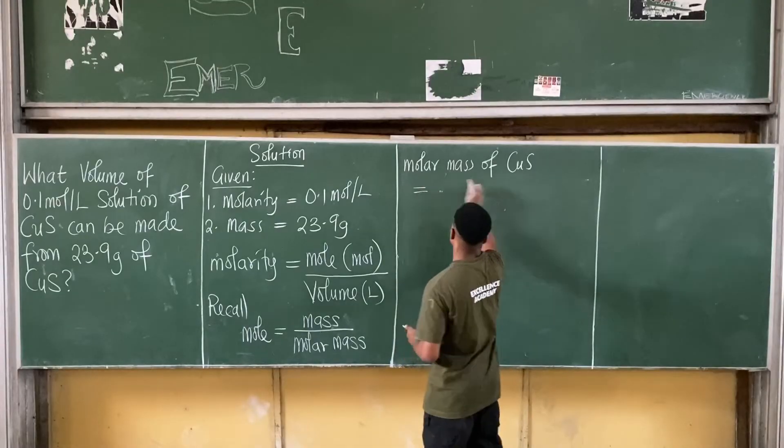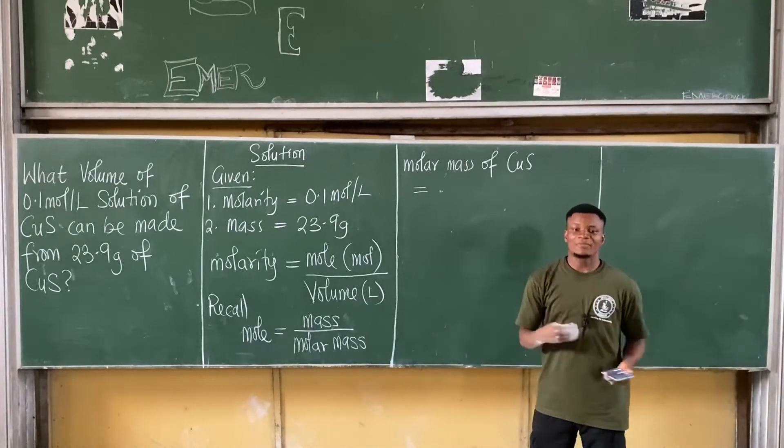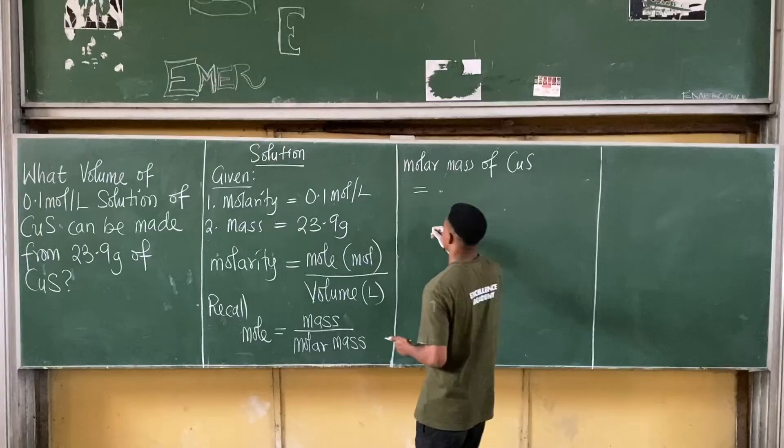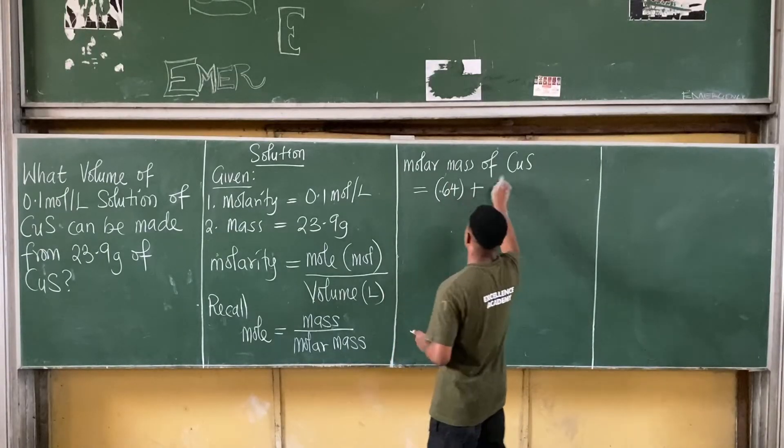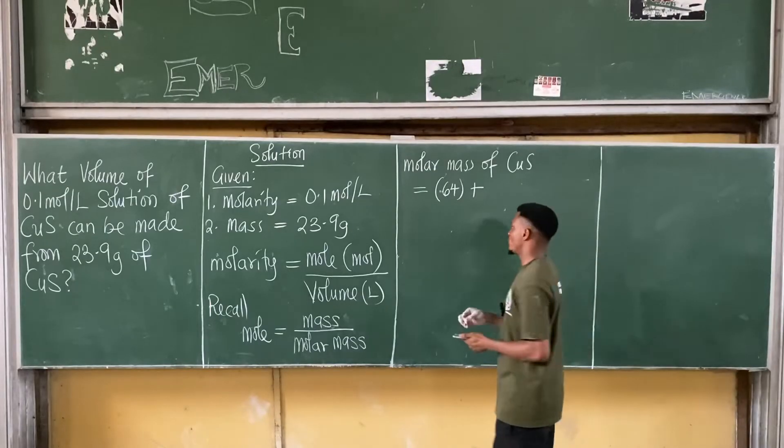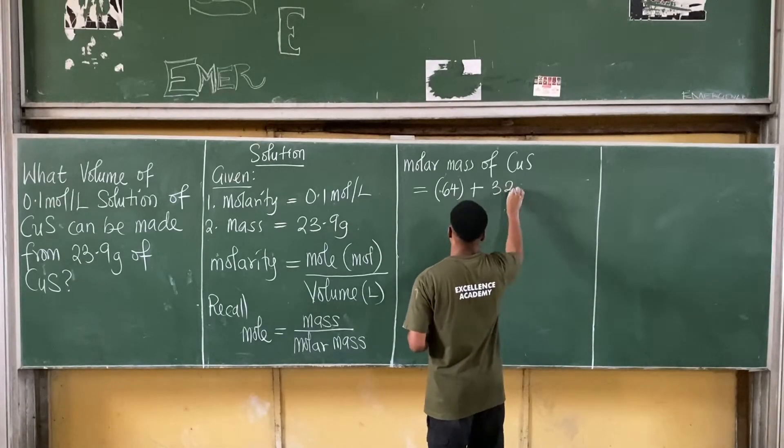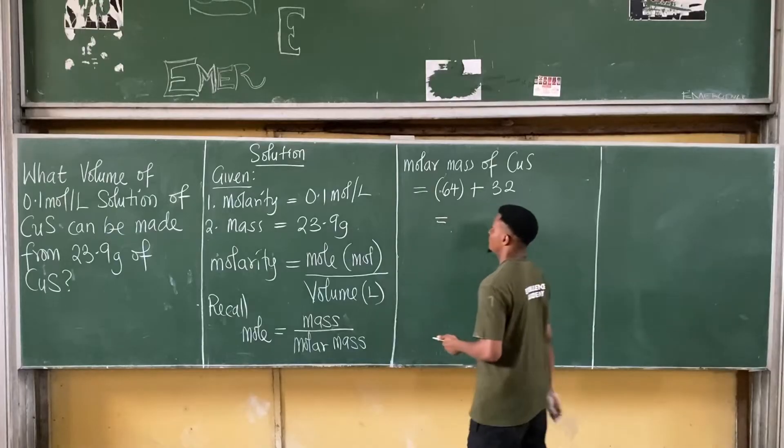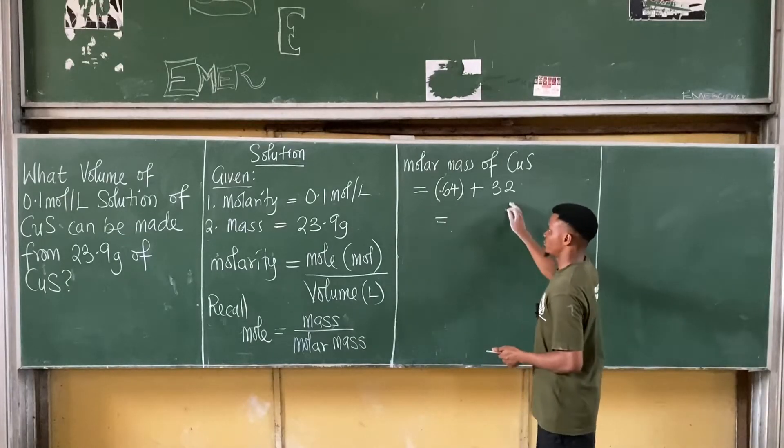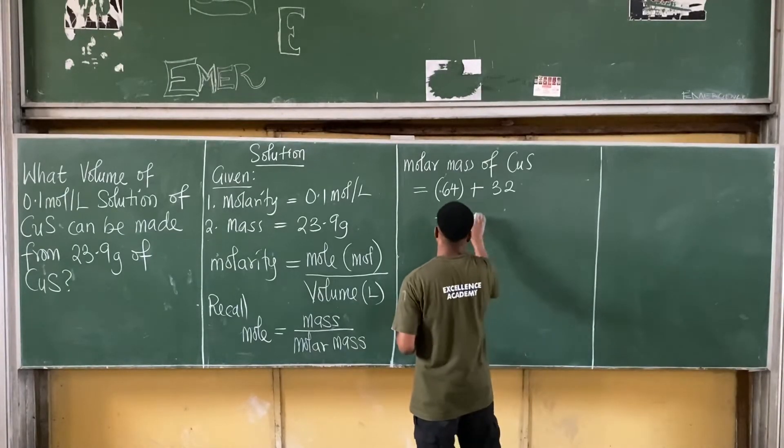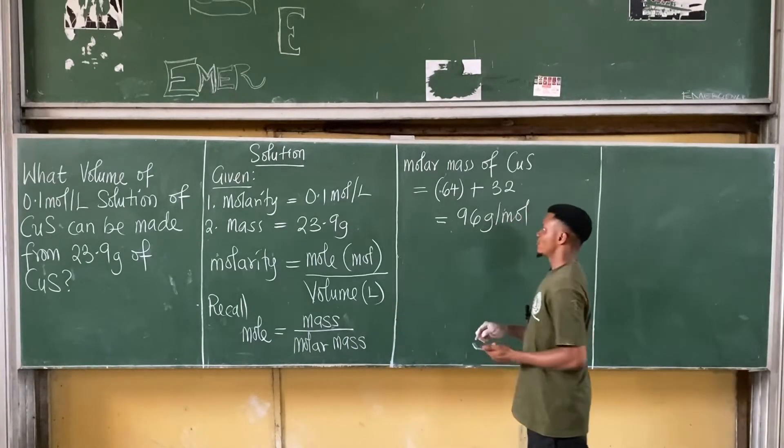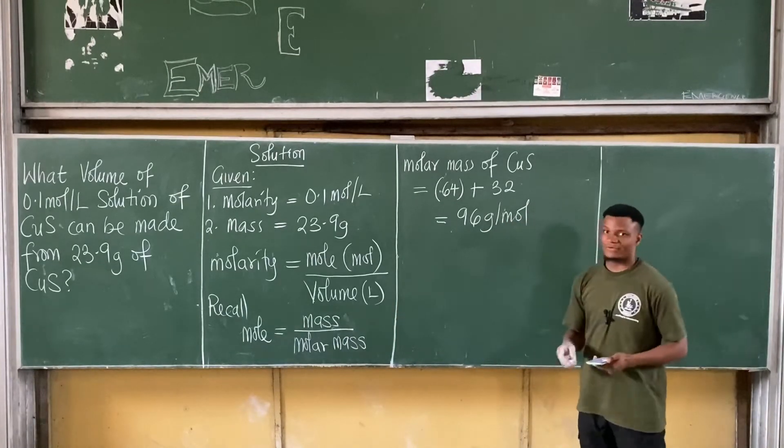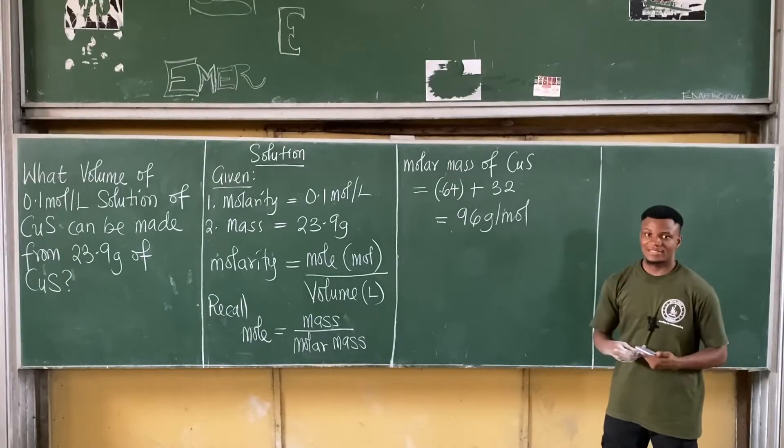So let me get the molar mass of copper 2 sulfide. That's equal to, for copper, the atomic mass of copper here is 64. So it becomes 64 plus, for sulfur, the atomic mass of sulfur is 32. So I have 32. If I combine this, 64 plus 32 gives you 96 gram per mole. The molar mass of copper sulfide is 96 gram per mole.